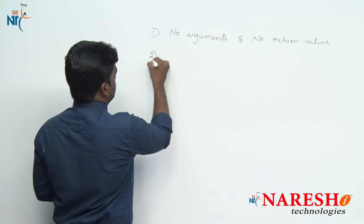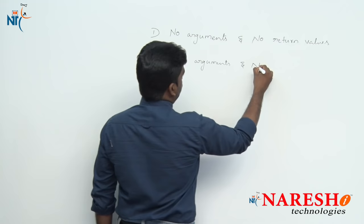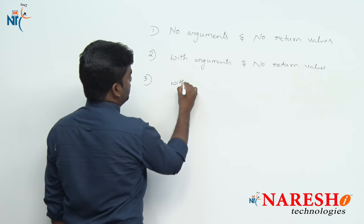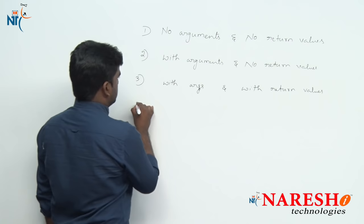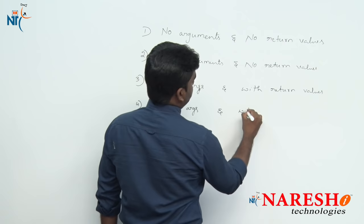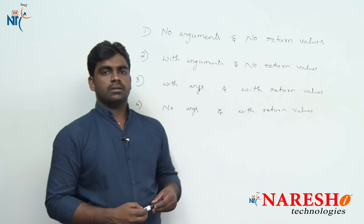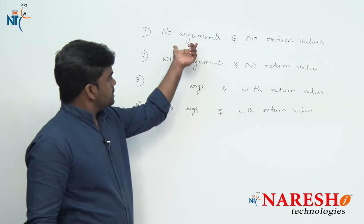The first classification: no arguments and no return values. Second: with arguments and no return values. Third: with arguments and with return values. And the last one: no arguments and with return values. These are the four classifications available for a method.